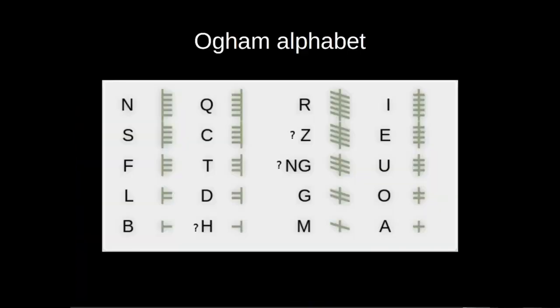This is what the original 20 Ogham characters looked like, along with their rough equivalents in the Latin alphabet that we use today. It was initially a vertically rather than horizontally written script. The characters were divided into four groups of five: the first two distinguished by the orientation of one to five lines or scores relative to a vertical stem line; the third crossed the stem diagonally; and the fourth consisted of one to five notches on the stem line, representing the vowels.